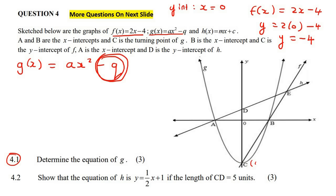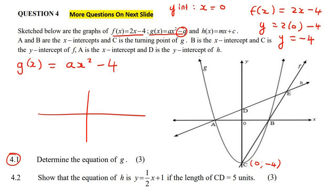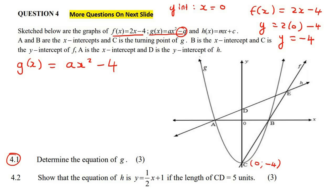So the coordinates of C would be zero and minus four. That means Q is also minus four — or Q is four, but there already was a minus there — because Q tells you whether the graph has moved up or down. A normal parabola starts at zero, and if it moves four places down, it'll cut at negative four. Now to find A, you just want to substitute another point. We could use B, but we don't know what A is. We could use B.